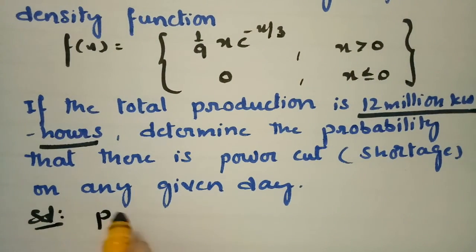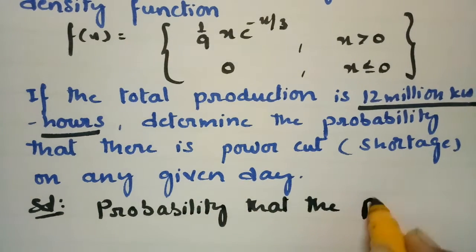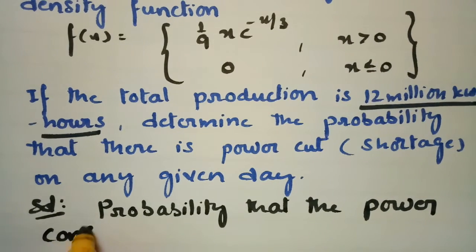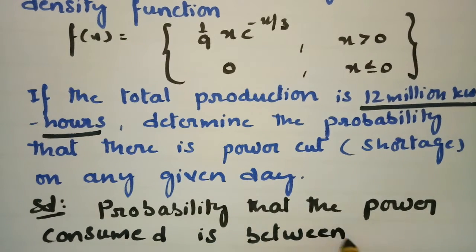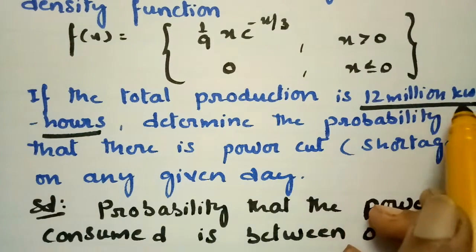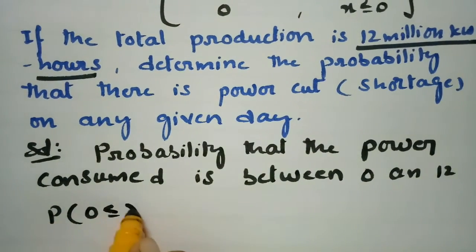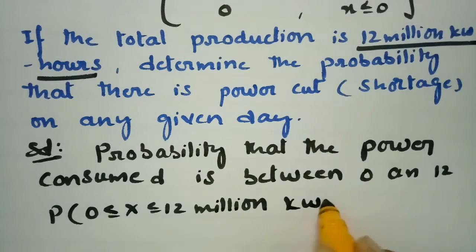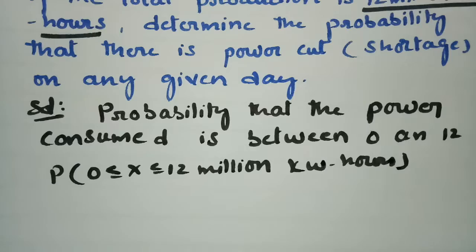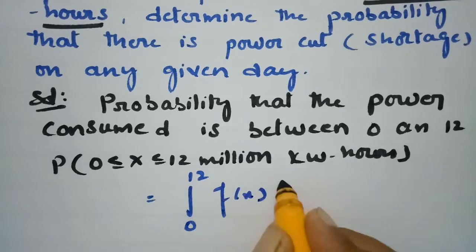First we find the probability that the power consumed is between 0 and 12 million kilowatt hours. We need to find the probability when x lies between 0 and 12 million kilowatt hours. According to our probability integral, this is ∫₀¹² f(x) dx.